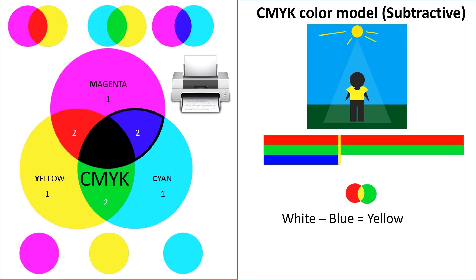Alright, so now let's look at what would happen if we were wearing a yellow shirt. Here, yellow subtracts only one color — which is why we placed that one under it earlier — and the color it happens to subtract is blue, which is on the opposite of it. And so white minus blue equals yellow, because all we're left with is red and green, which is yellow.